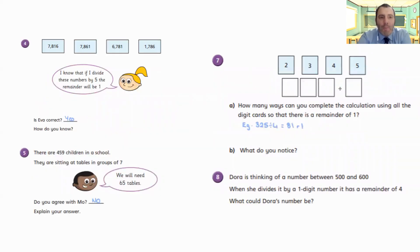So question four. Is Eva correct? Yes. If you look at the numbers that each of these numbers ends with, they're all one more than a multiple of five. So you've got 15 for the first one and you've got 16. 61 is one more than 60. 81 is one more than 80 and 86 is one more than 85. So they're all one more than the nearest multiple of five.